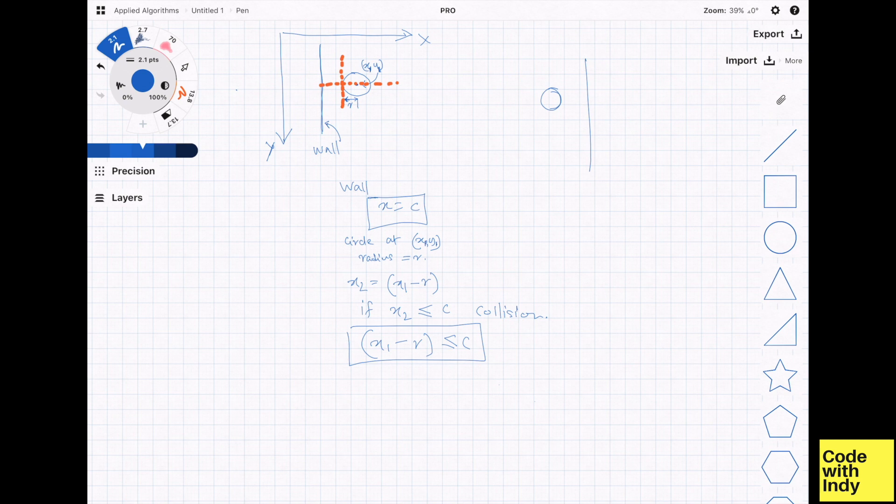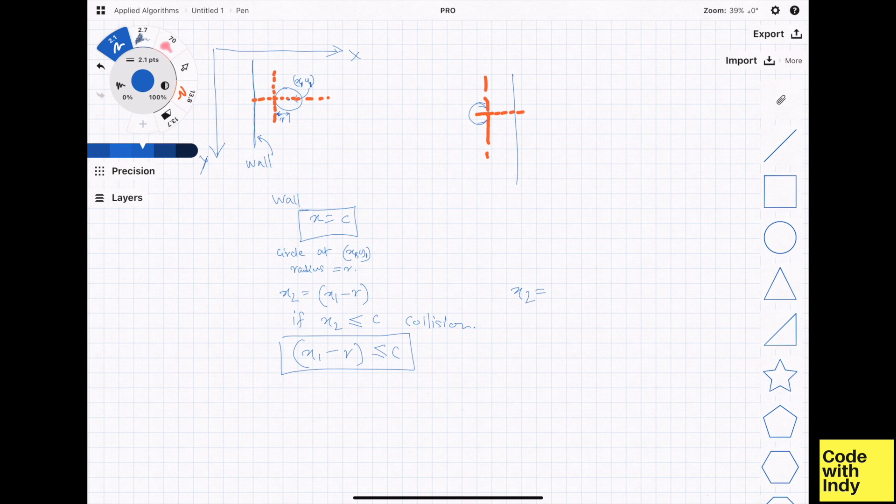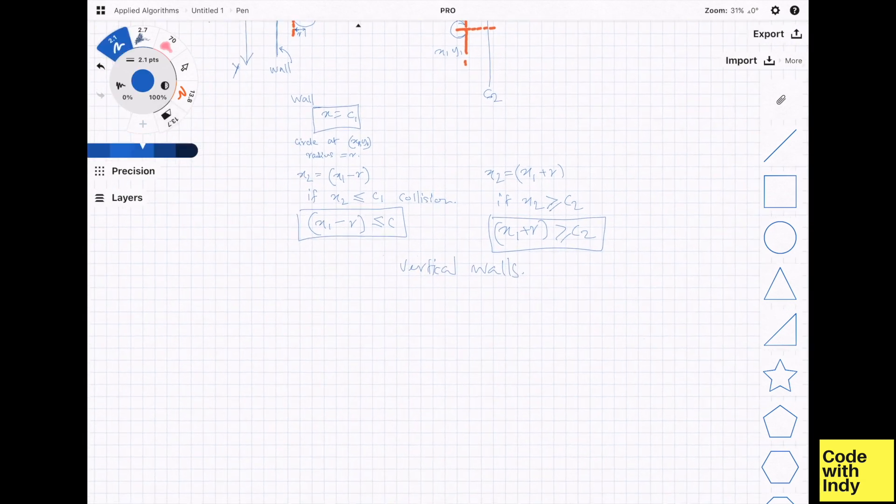That's simple enough. Let's take a look at the case where the circle is moving from left to right and the wall is on the right side. Similar to the above, we have a wall at x equals c2. The circle will touch the right wall when x1 plus r equals c2. So the condition to check would be x1 plus r greater than or equal to c2, which becomes x1 greater than or equal to c2 minus r.